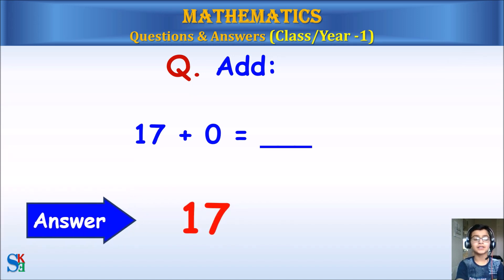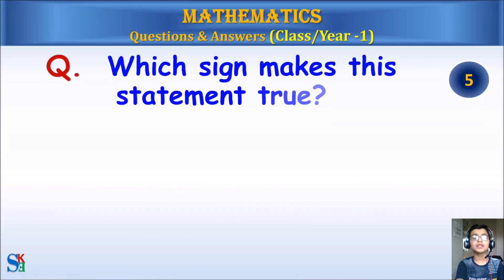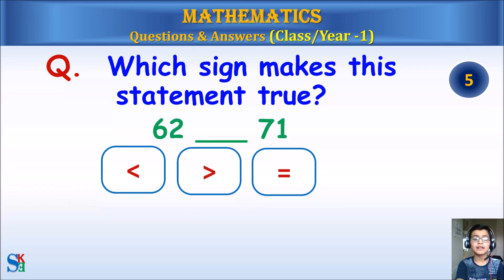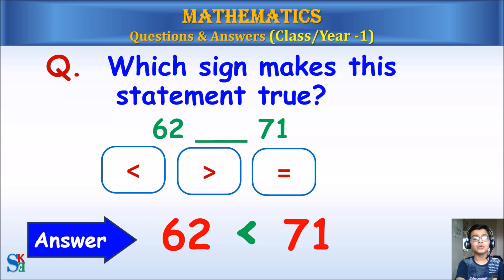Answer: 17. Which sign makes the statement true? 62 is less than, greater than, or equal to 71? Answer: 62 is less than 71.